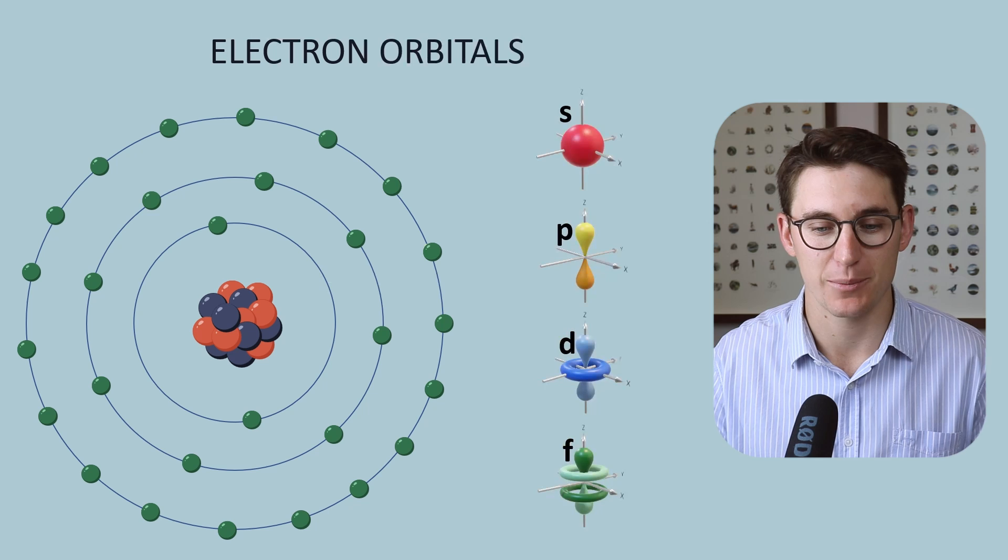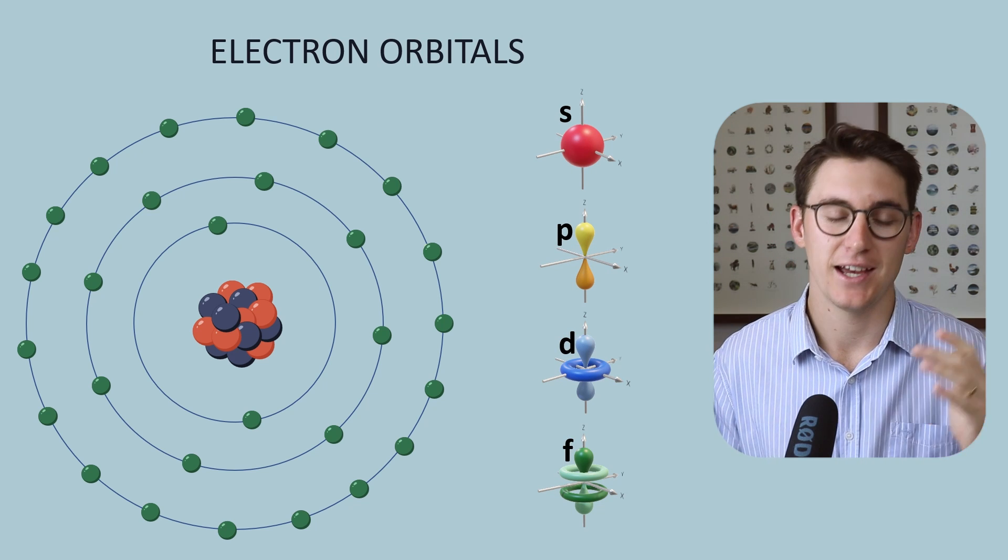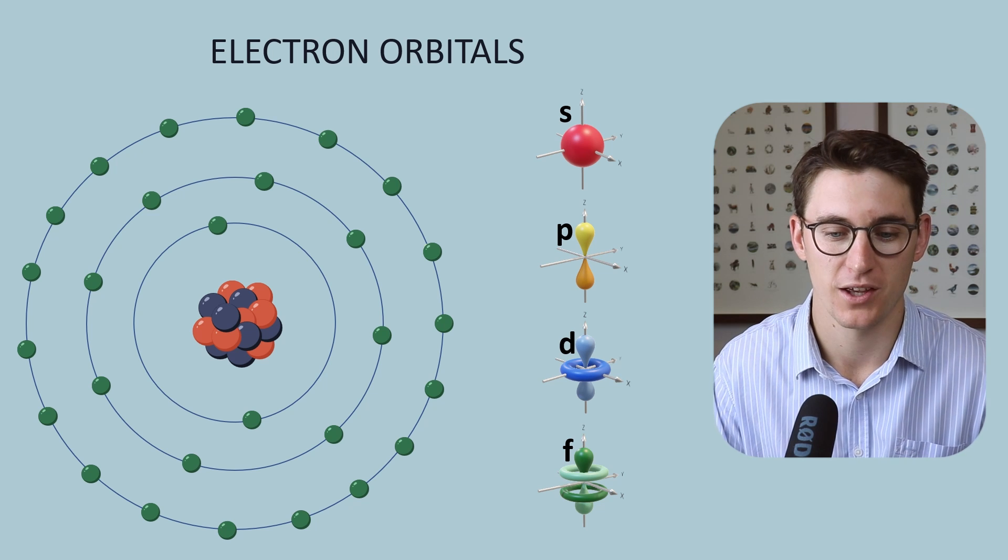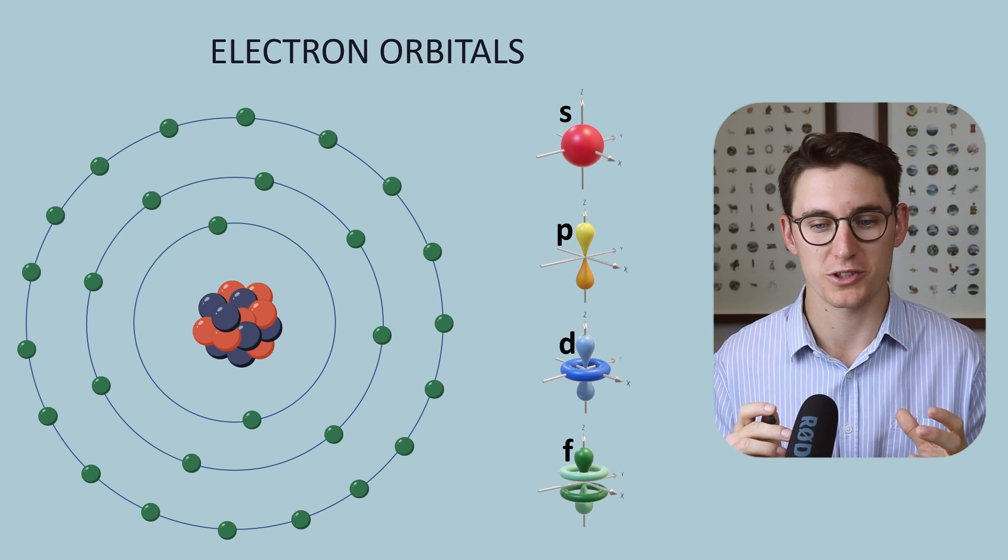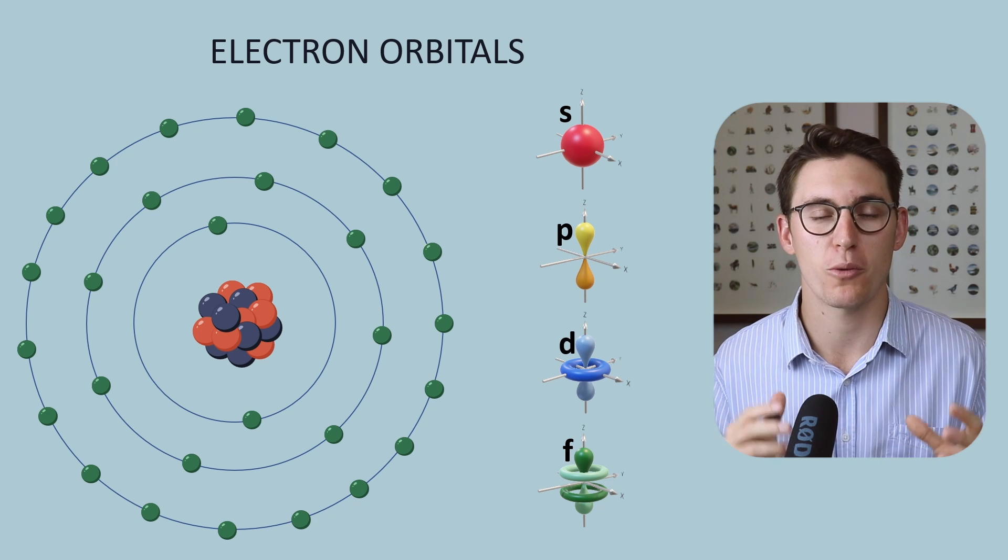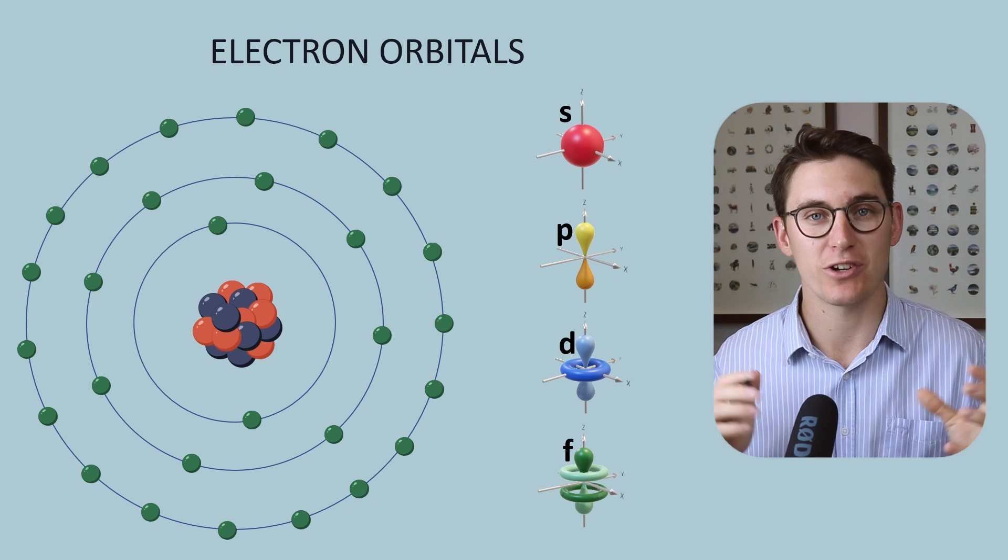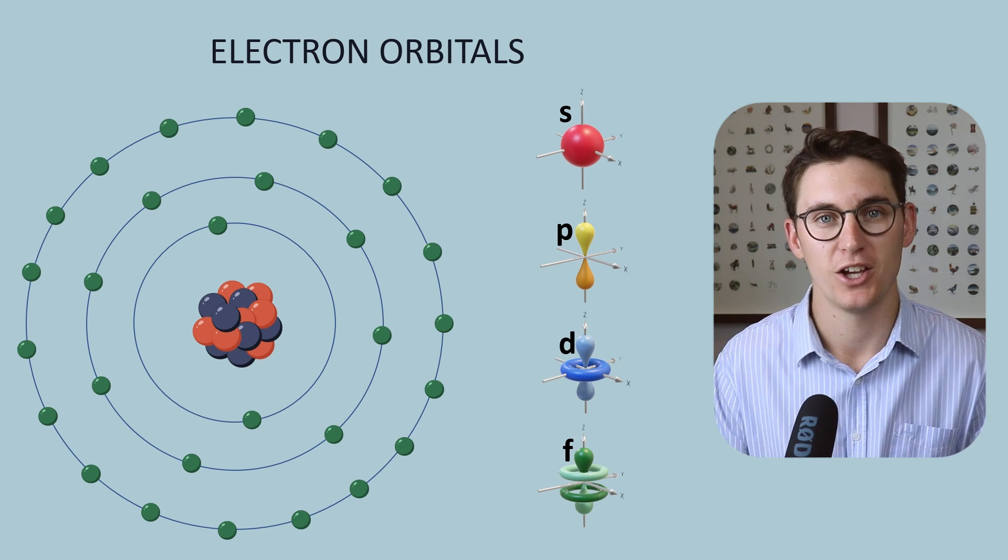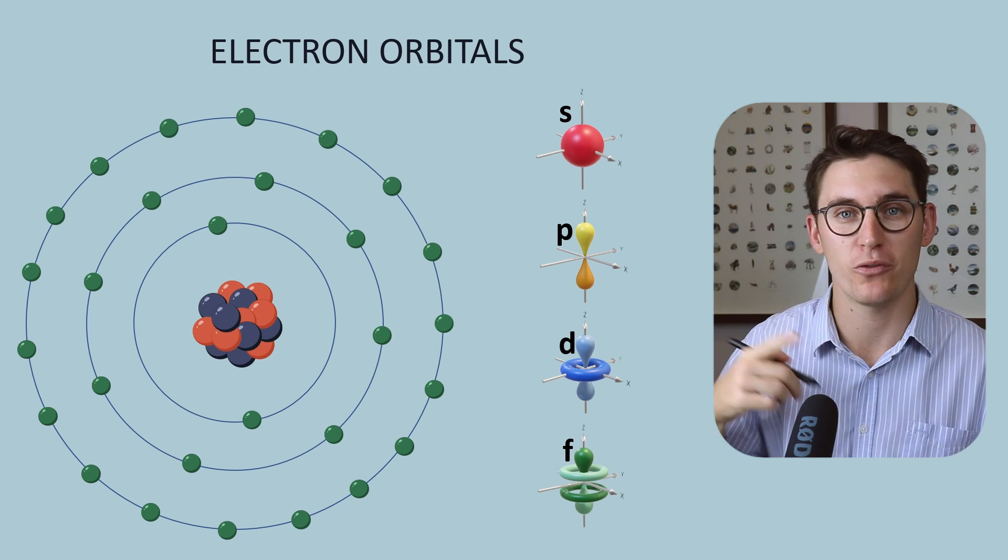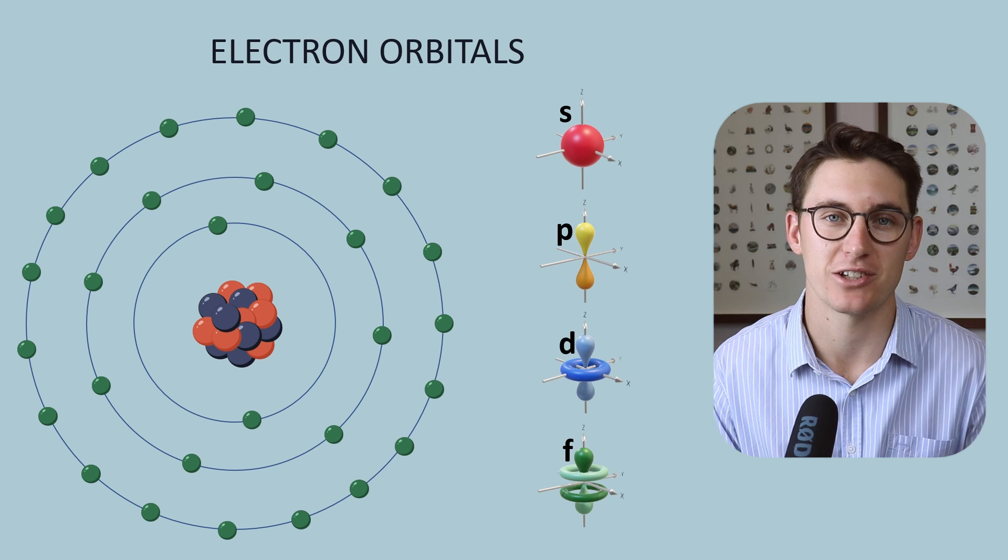Now there are four different types of electron orbitals. We have an s orbital, a p, a d, and an f orbital. What exactly is an electron orbital? Well an electron orbital, as you can see here, it's a 3D shape. It's a region of probability or likelihood of an electron occurring in that 3D space within an atom. So electrons don't necessarily go in perfect circles around the nucleus. They actually exist within these various different shapes.